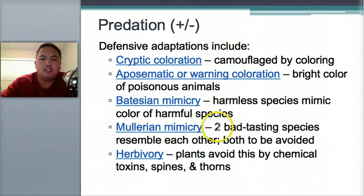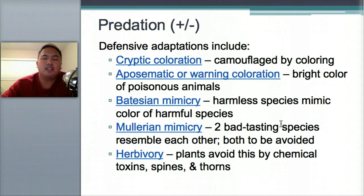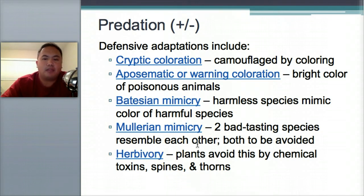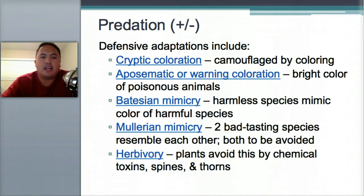Müllerian mimicry means two bad-tasting species resemble each other so predators avoid both — like the monarch butterfly example. Herbivory adaptations are for plants: chemical toxins, spines, and thorns. Even though plants can't attack, they have different adaptations to survive. Think about roses and thorns.